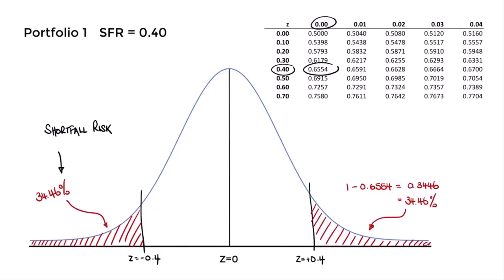To summarize: both the safety first ratio and shortfall risk use risk and excess return to compare and rank portfolios. The safety first ratio measures how far above the minimum acceptable return the expected return is — bigger is better. Shortfall risk measures the probability of the portfolio's return falling below the minimum acceptable level — the smaller the shortfall risk, the better.